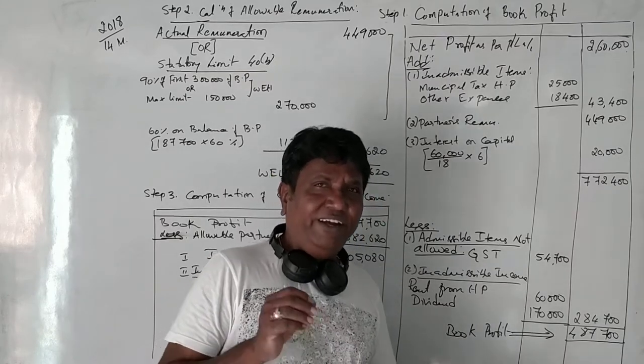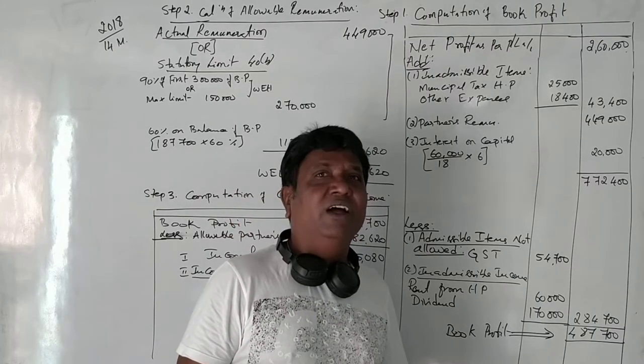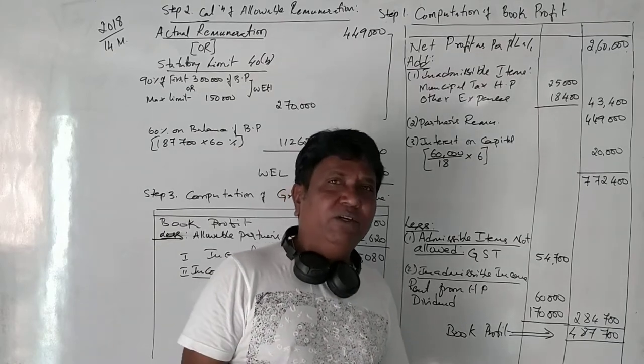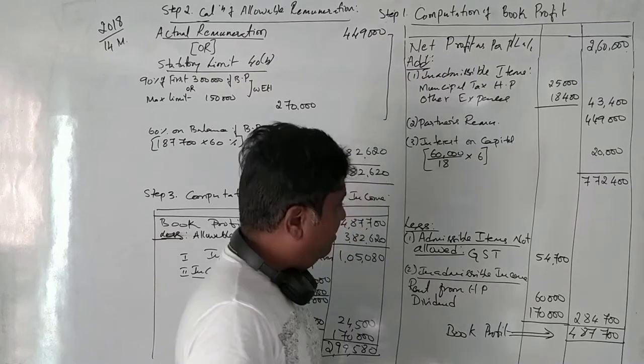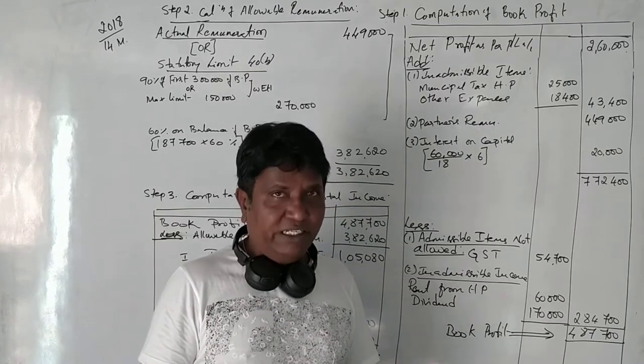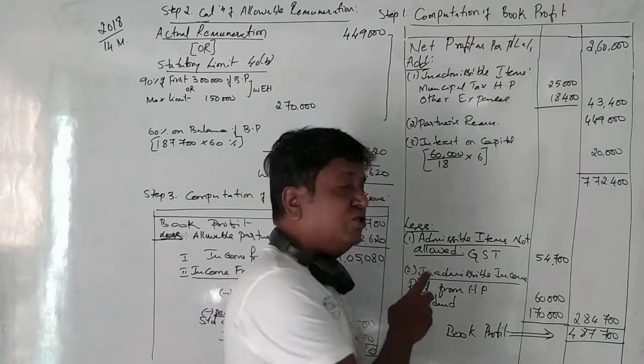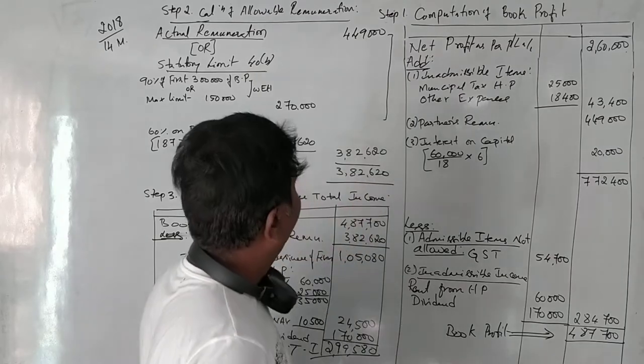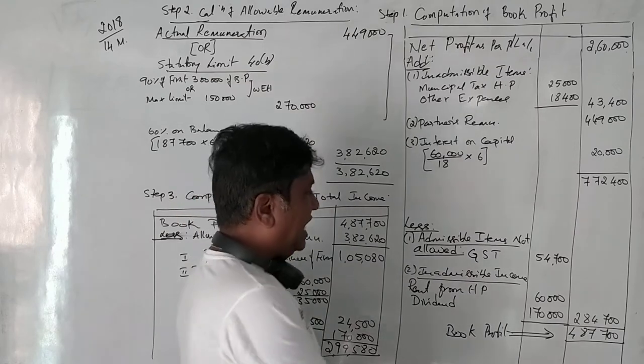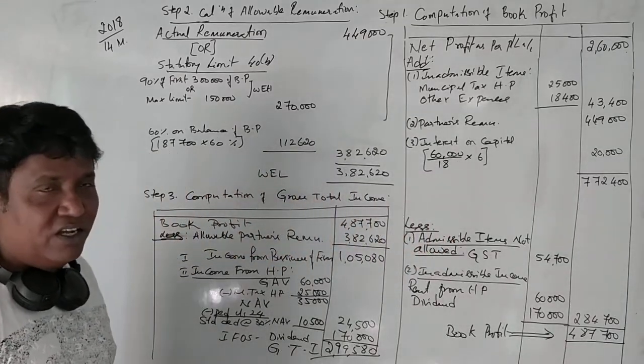Apart from that, we have some inadmissible incomes as rent from house property is 60,000 and dividend is 1,70,000. In this question, dividend is not clearly given whether it is an Indian company or dividend from foreign company. You can assume anyways, no problem. If you assume it is dividend from Indian company, first we add it here while solving on the gross total income, while computing income from other sources, dividend from Indian company is exempted. But here, I am assuming that dividend from foreign company. Once you've done the book profit, we got 4,87,700 rupees. I've added these three items and deducted from the 4,87,700 rupees book profit.